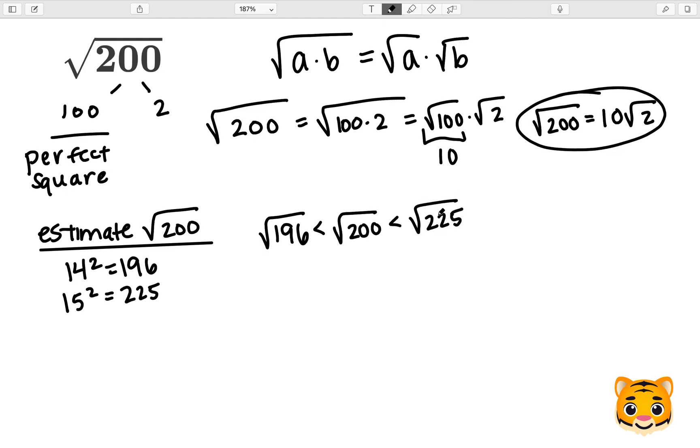Because we know 14 squared gives us 196, we can rewrite the square root of 196 as 14. Similarly, because we know 15 squared is 225, we can rewrite the square root of 225 as 15.